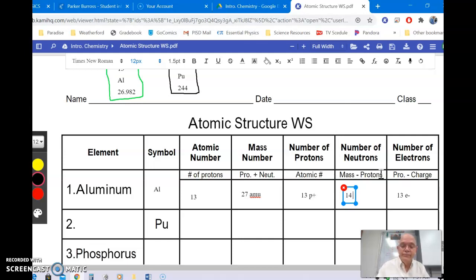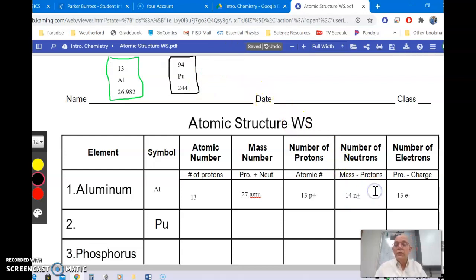Now, for neutrons, the symbol's going to be N, and then it's going to be plus minus, which is kind of hard to do on a computer, but I'm going to try it here. So, 14 neutrons plus and minus. And that would be it for that line.